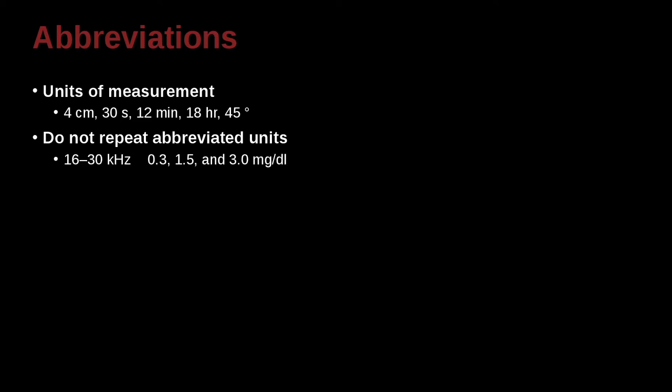You don't need to repeat when you're using numbers that are grouped together. For example, 16 to 30 kilohertz. You do not need to write 16 kilohertz to 30 kilohertz. You can just write 16 to 30 like this, or the other example next to it, which is the 0.3, 1.5, and 3.0, milligrams per deciliter. So in this case, you do not need to write the MgDL, MgDL. You just go ahead and write it on the last one only. That's good.